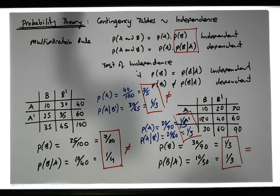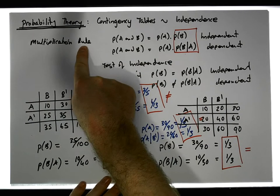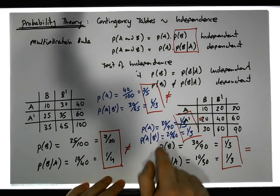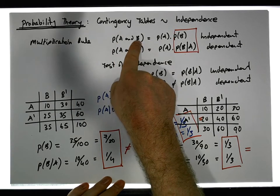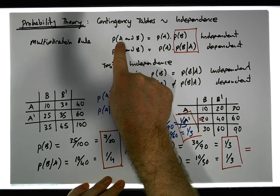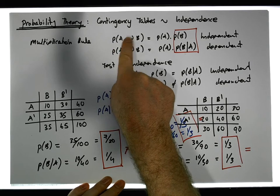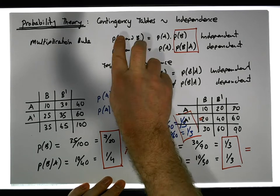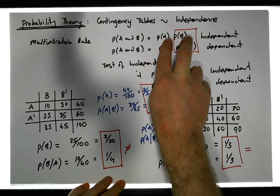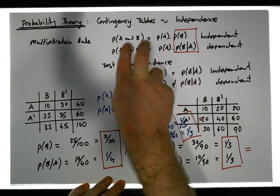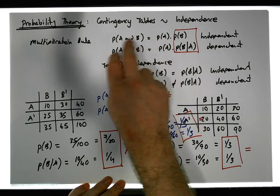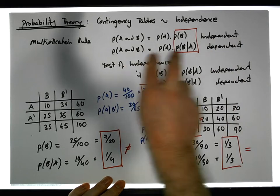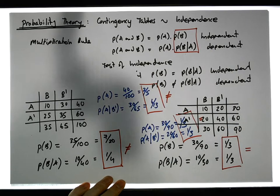You can now see why there are two versions of the multiplication rule to calculate the probability of A and B. It depends on whether A has influenced B or whether B has influenced A — that is, whether the two events are independent of each other or dependent on each other.